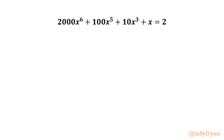As we can see, all the terms in LHS have x. So x cannot be 0 for our equation. If we plug in x equal to 0, LHS will be 0 and RHS is 2 — 0 cannot be equal to 2.